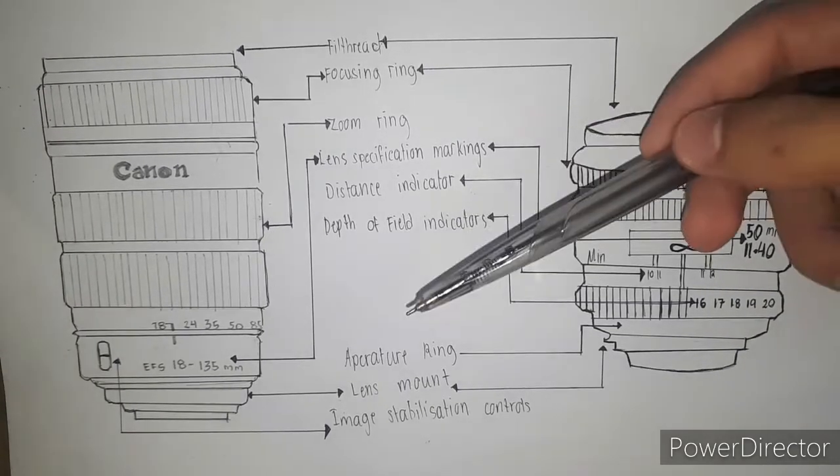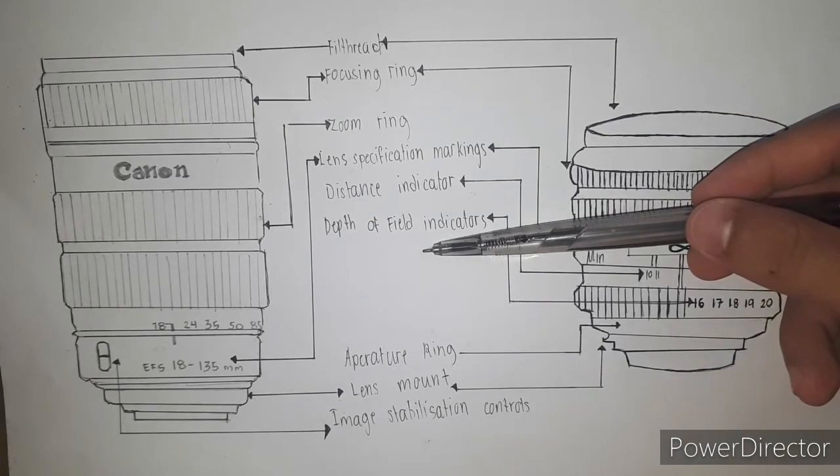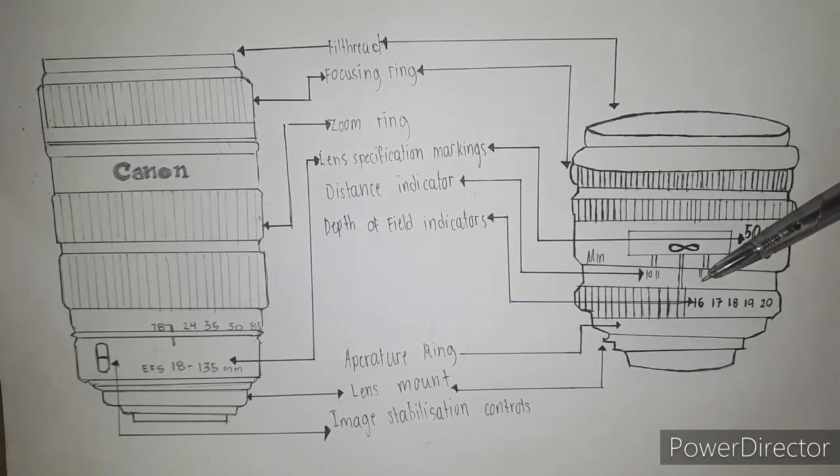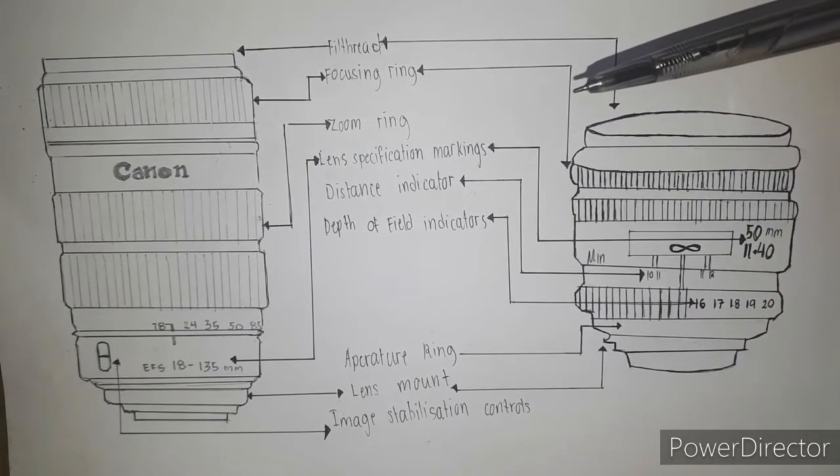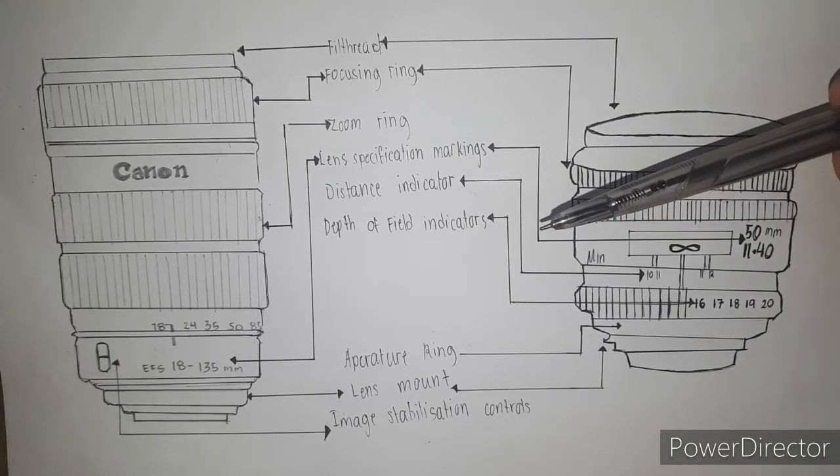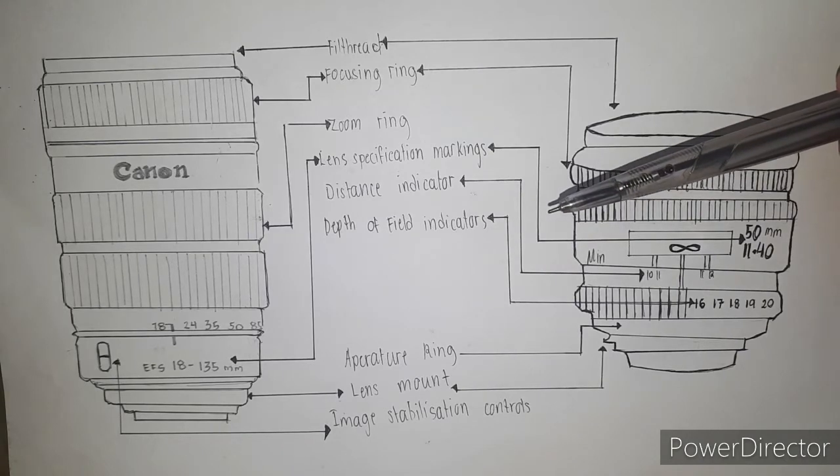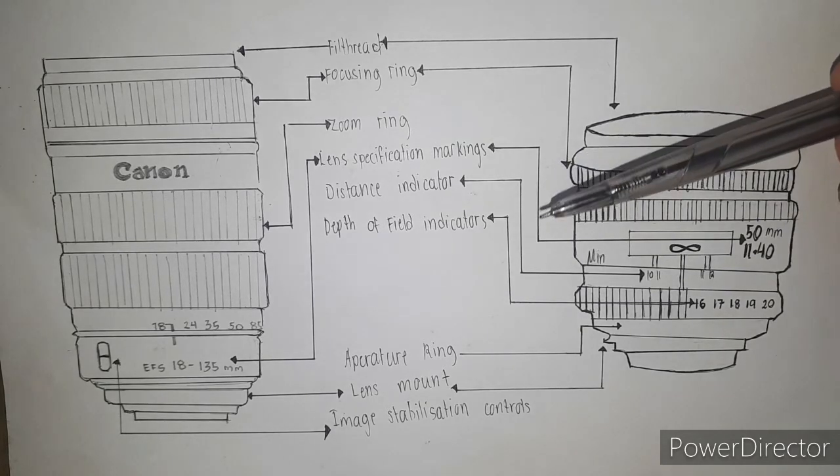Fifth is the distance indicator. The distance indicator shows how far away the lens has focused, from the nearest to farthest. It can be useful when you know a fixed distance that you manually want to focus on, or if you want to know where the lens is focused within its range, such as for close-up photography.